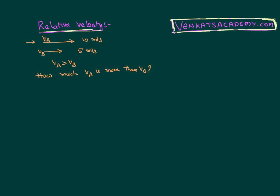That's what you mean by relative velocity. We can say velocity of the A with respect to B as VA minus VB. It is more only by 5 because 5 is already covered by B. So when compared with B, A is having only extra velocity of 5 meter per second.